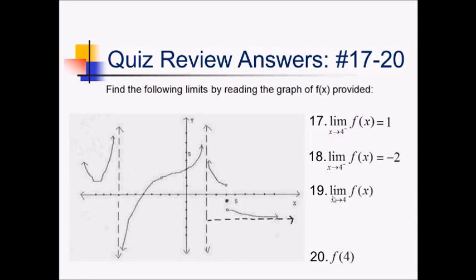As we approach 4 from both sides, the left and the right don't agree, so that means that this is DNE, does not exist. And then f of 4, that's the solid dot at the x value 4, that's right here. That has a value of negative 1.